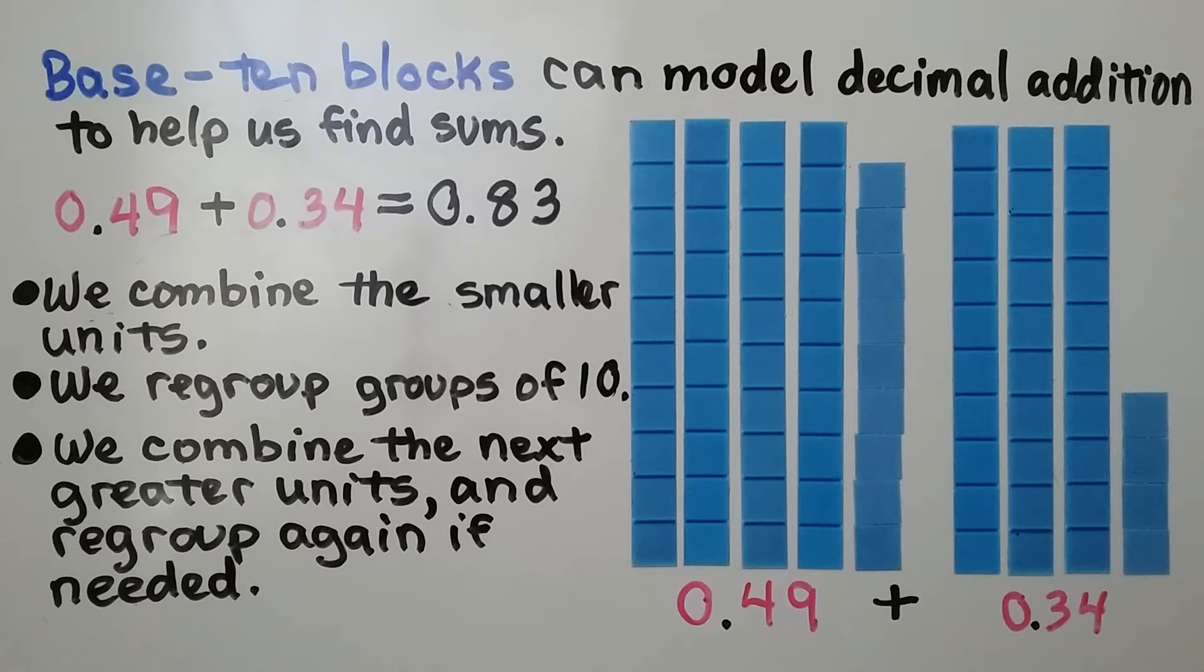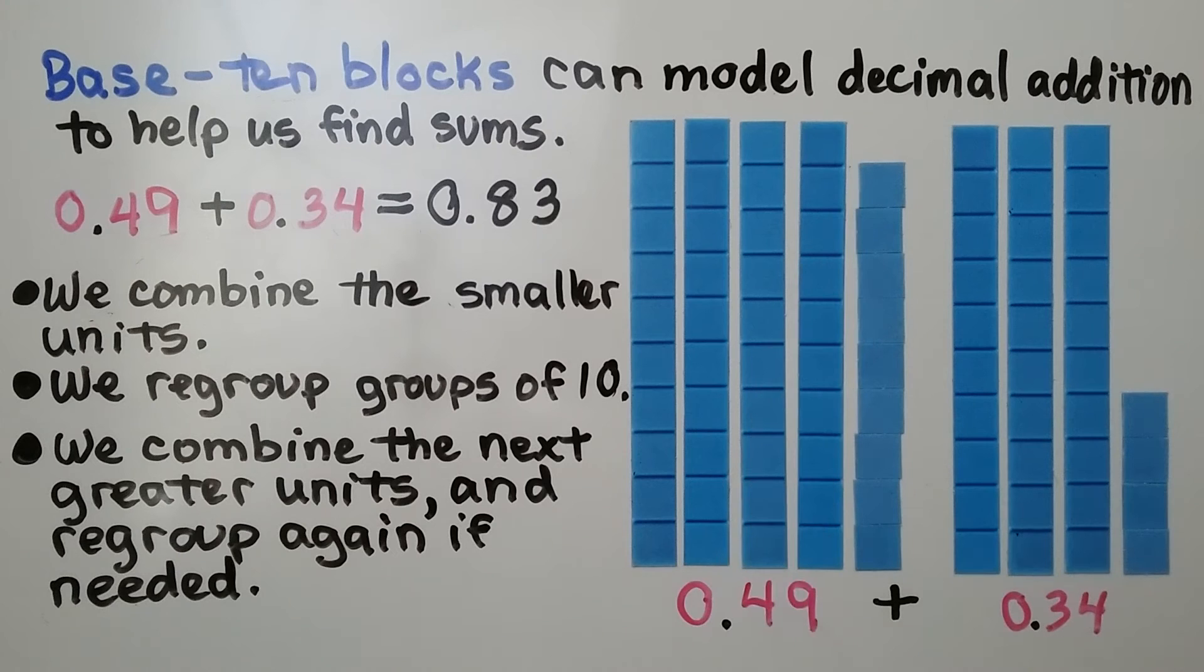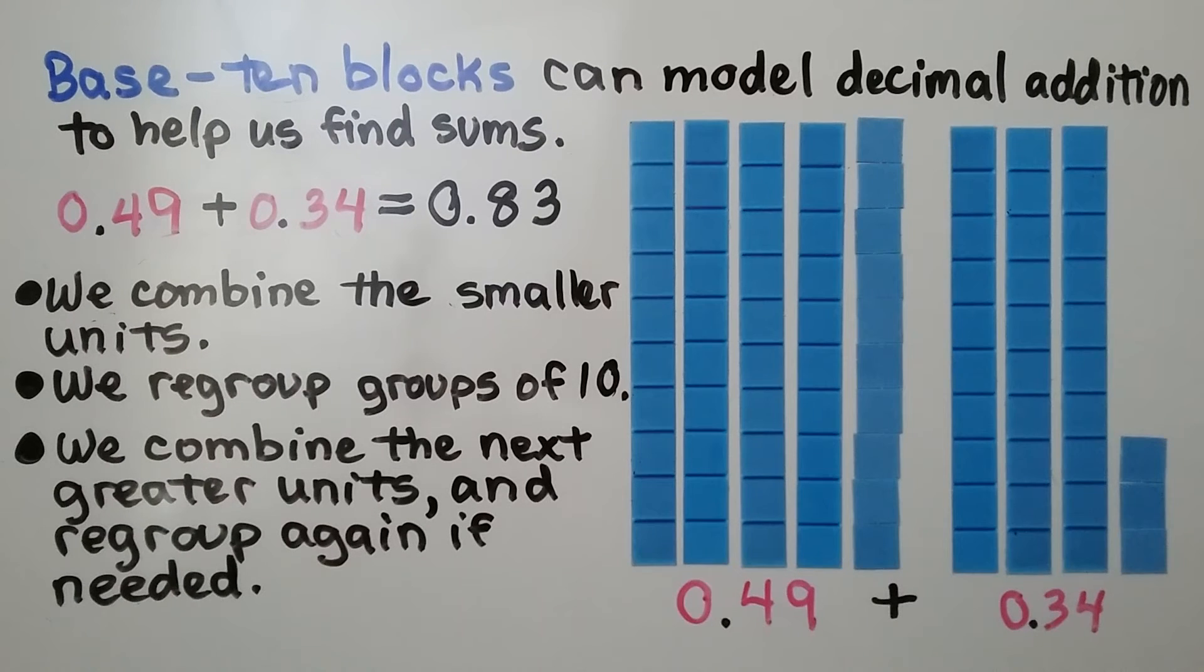Base ten blocks can model decimal addition to help us find sums. We have 49 hundredths plus 34 hundredths. We combine the smaller units, so here we have four tenths and nine hundredths. Here we have 3 tenths and 4 hundredths. We can take one of these hundredths and put it up here to make a tenth. We regroup groups of ten and combine the next greater units and regroup again if needed.